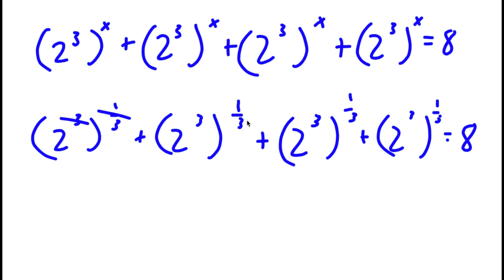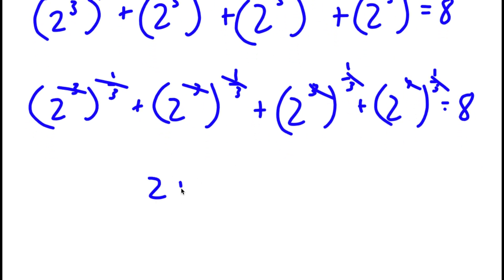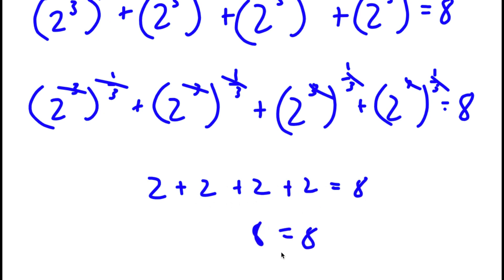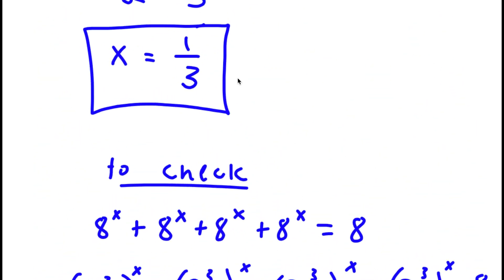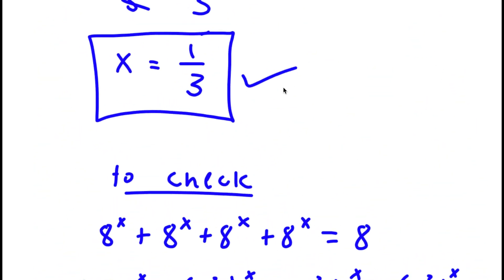Now 3 and 1 third cancel out, so I'm simply left with 2 plus 2 plus 2 plus 2 is equal to 8. And 2 plus 2 plus 2 plus 2 is 8, so I have 8 is equal to 8. Because this is right, my solution is right.